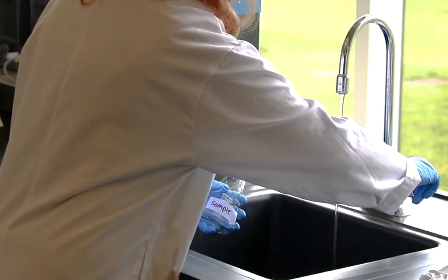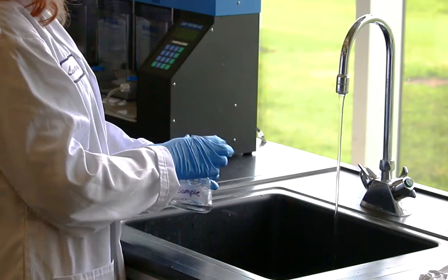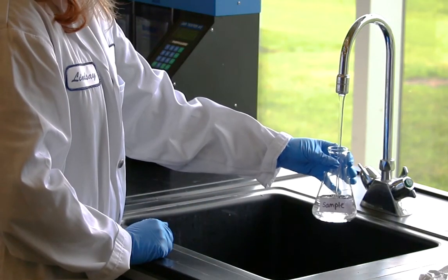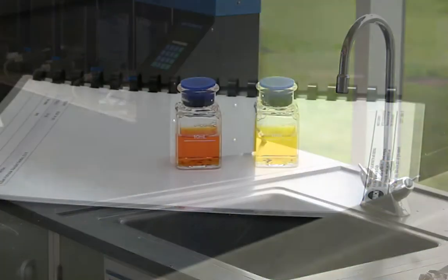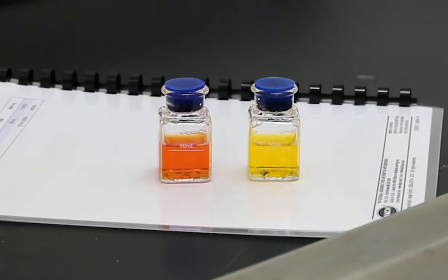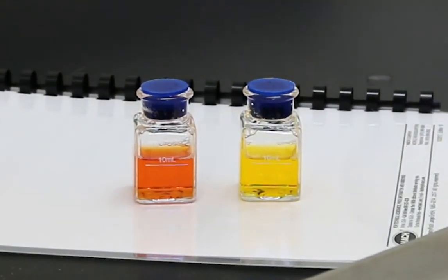In this test, the ascorbic acid reagent reduces all oxidized forms of manganese, and then the alkaline cyanide reagent masks potential interferences. The PAN indicator then forms an orange color complex with the manganese in the water.